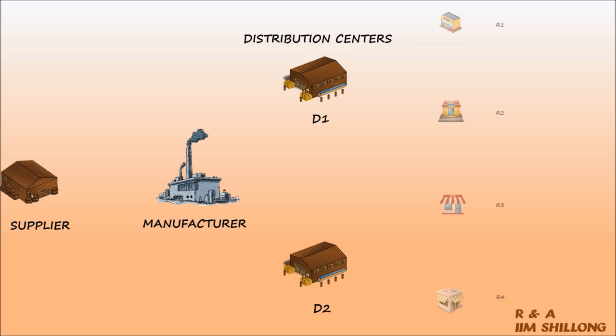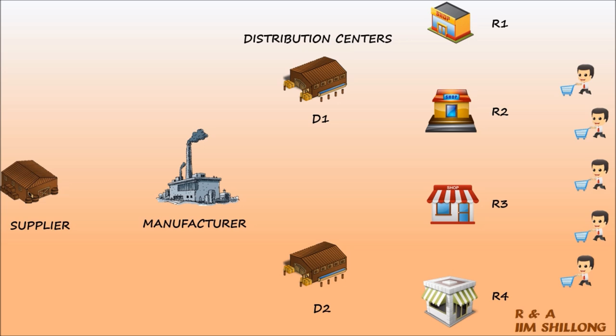Welcome to the supply chain of ABC Confectionary Limited. The supply chain consists of the following: supplier, the manufacturer, the distribution center, the retail outlets, and finally the end consumer.